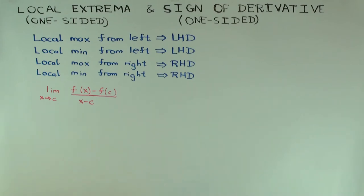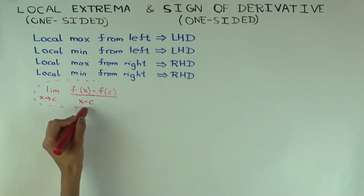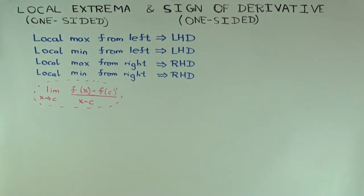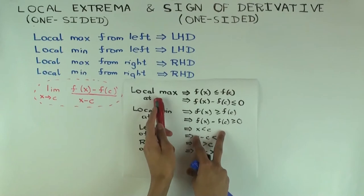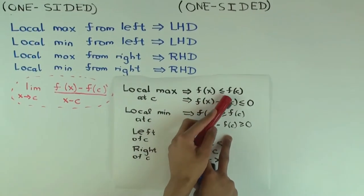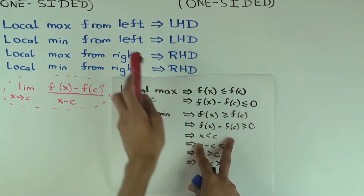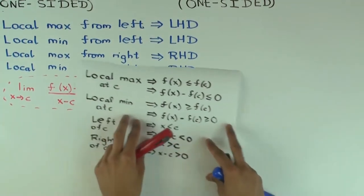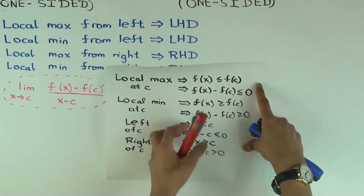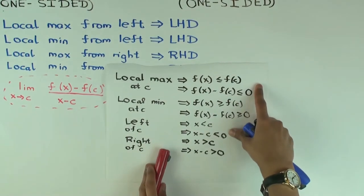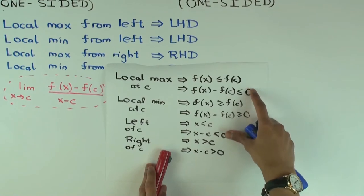The left-hand derivative is defined as the limit of the expression where we take the limit as x approaches c from the left — so you put a minus here to indicate left. Local max at a point c means f(x) ≤ f(c) for x to the immediate left. So the numerator f(x) − f(c) is less than or equal to zero, and the denominator x − c is strictly less than zero. Dividing, the quotient is greater than or equal to zero.